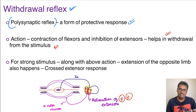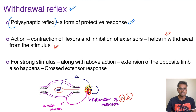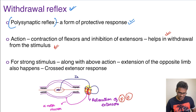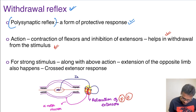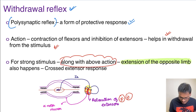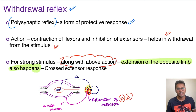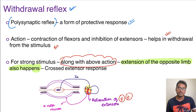Sometimes when the stimulus is very strong — for example a strong prick — you withdraw one hand, and at the same time the opposite side of the body supports itself by extending the arm. This is called the crossed extensor response. This extension of the opposite limb happens to support the body from falling down, and is also called the crossed extensor reflex, which is another example of a polysynaptic reflex.